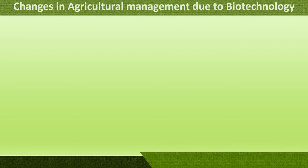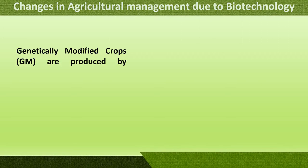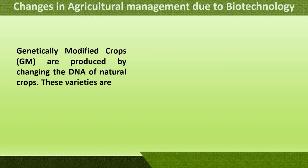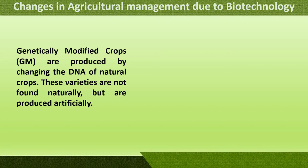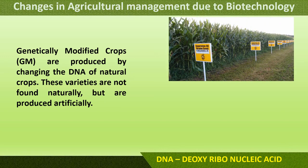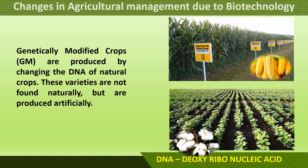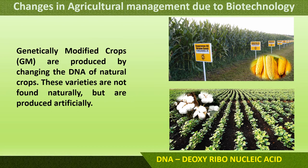Genetically modified crops, or GM crops, are produced by changing the DNA of natural crops. These varieties are not found naturally but are produced artificially in a laboratory. DNA, or deoxyribonucleic acid, is altered to produce these crops. Examples include corn and BT cotton, which are grown artificially.